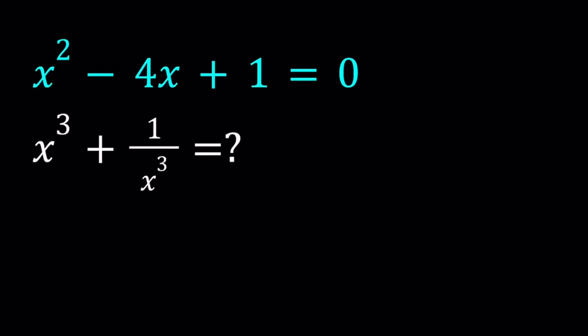Hello everyone. In this video we're going to be dealing with a polynomial equation. We have x squared minus 4x plus 1 equals 0, and we're going to evaluate x cubed plus 1 over x cubed. So we're going to find a numerical value for x cubed plus 1 over x cubed. I'll be presenting three methods. Let's start with the first one.